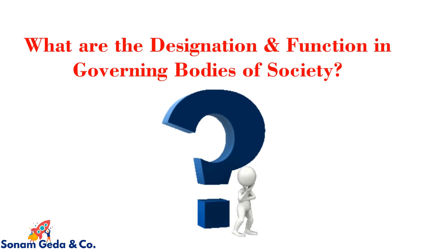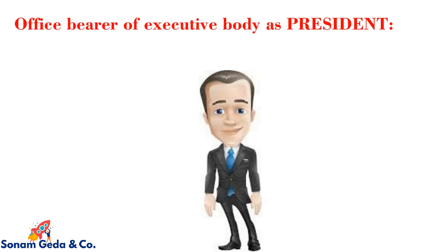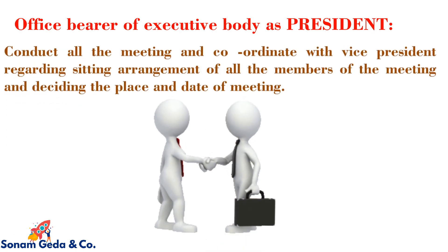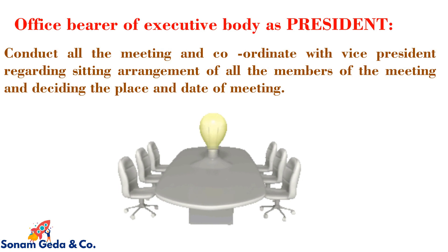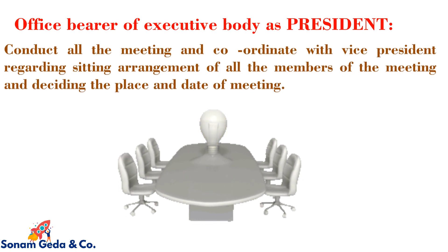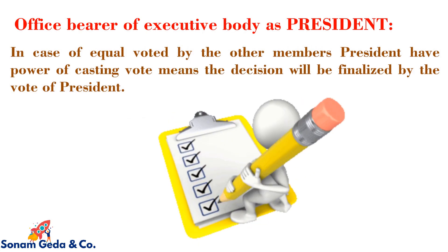What are the designation and function in the governing body of a society? The office bearer of the executive body — as president — conducts all the meetings and coordinates with the vice president regarding sitting arrangement of all members. The president decides the place and date of the meeting. In case of equal votes by the other members, the president has the power of a casting vote, meaning the decision will be finalized by the vote of the president.